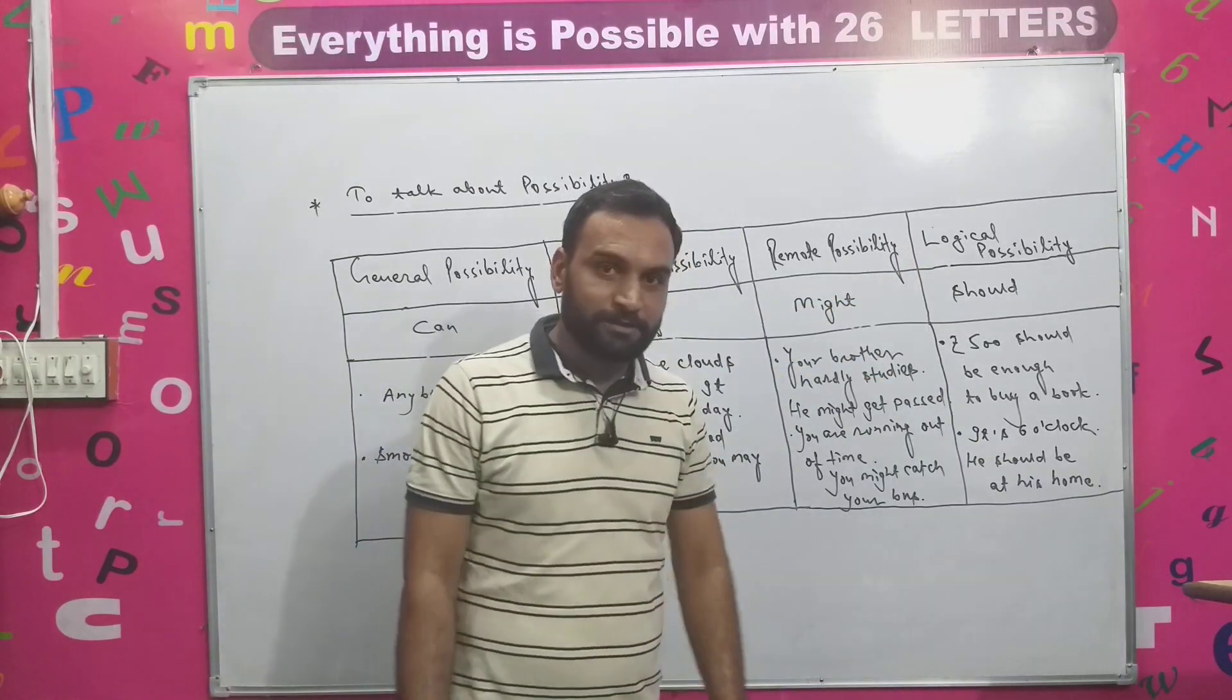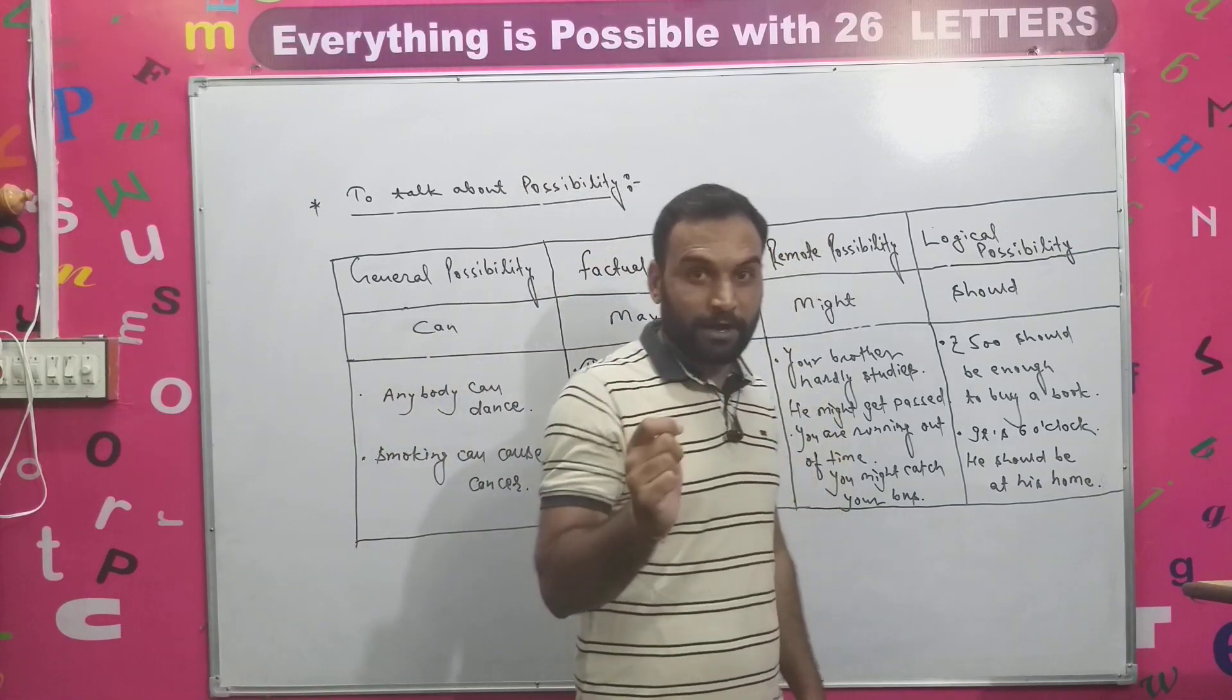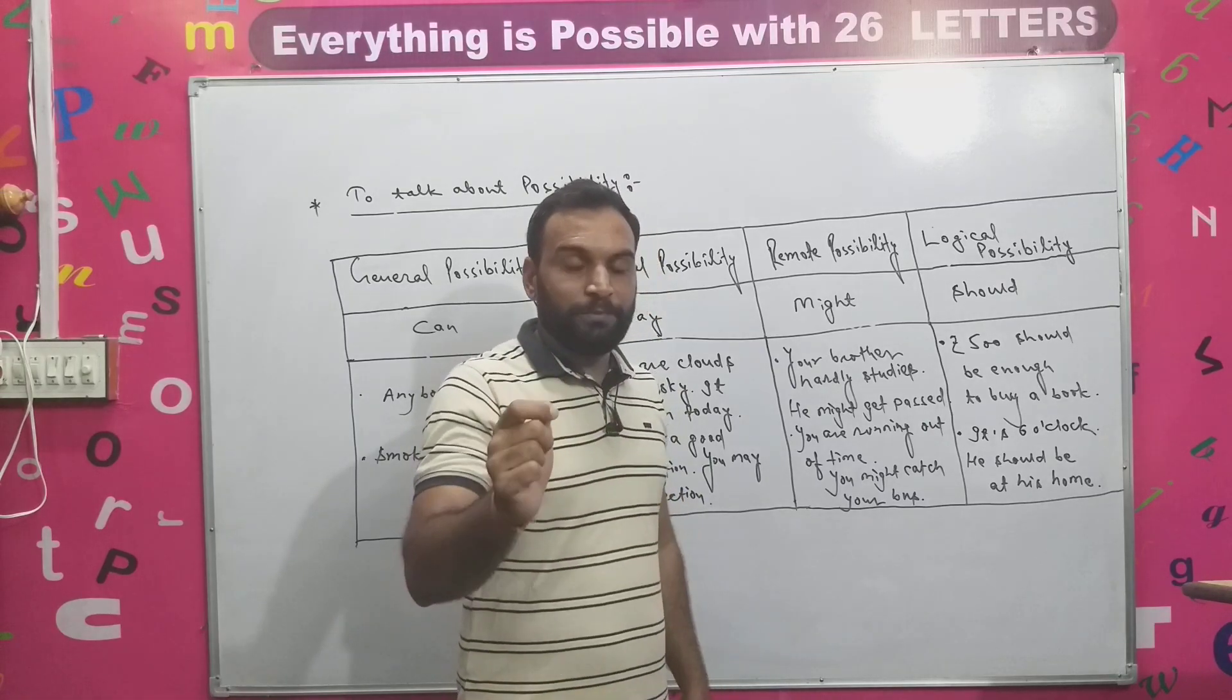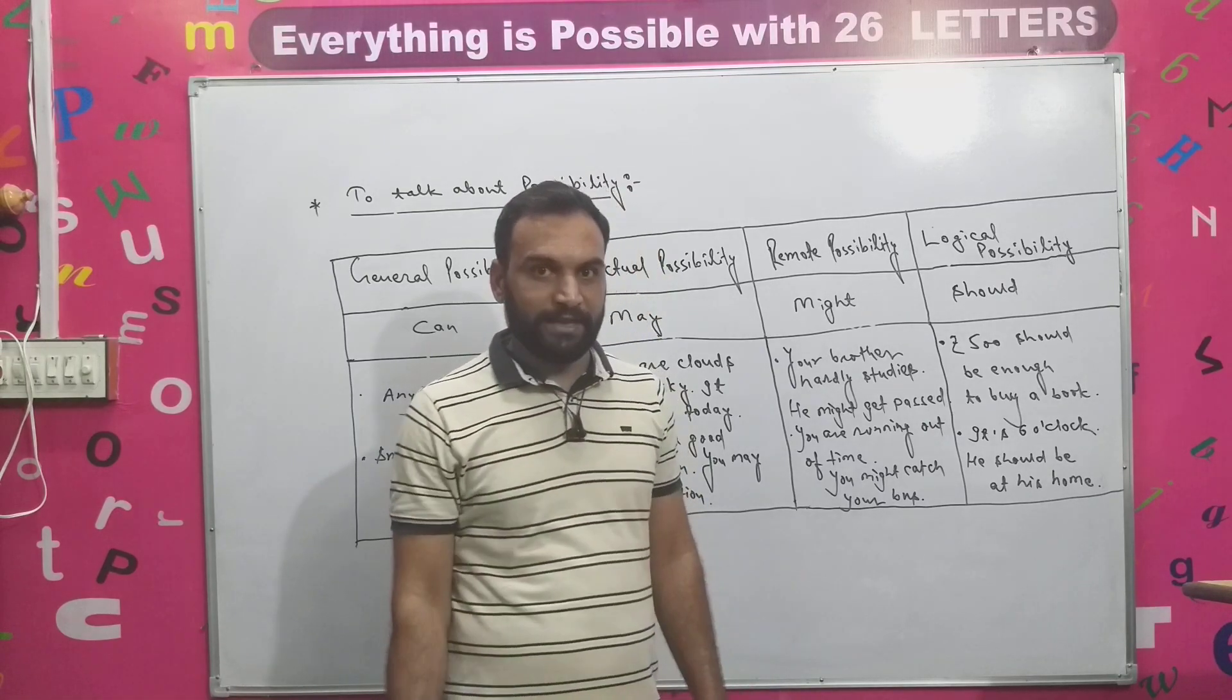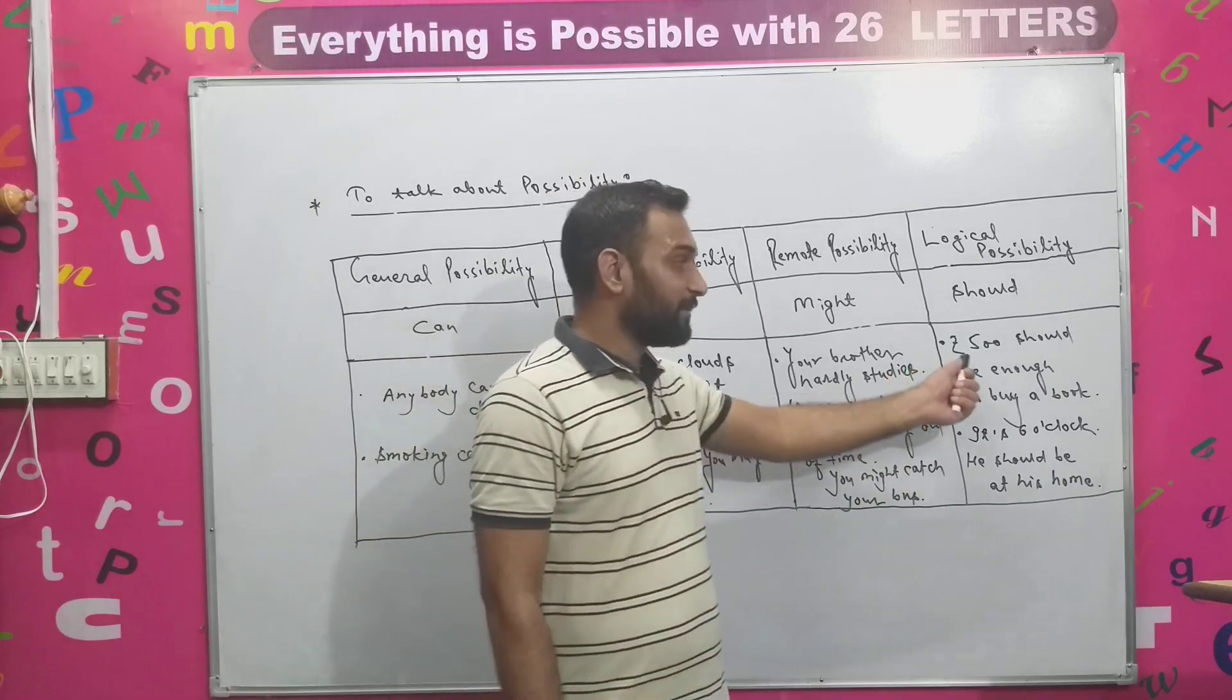And finally, let's talk about logical possibility. So when you talk about what you want to do, 'should' - should is also a modal. You have to take the help of 'should'. And the examples are,